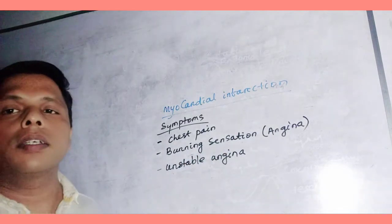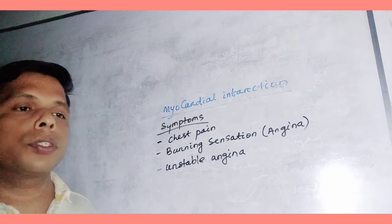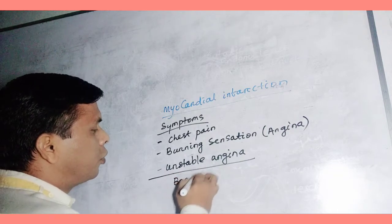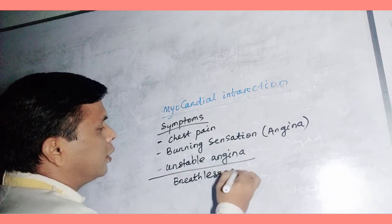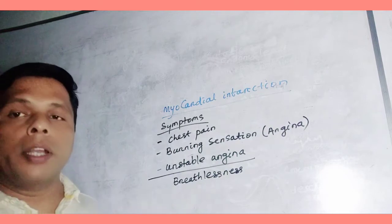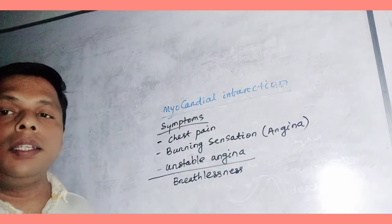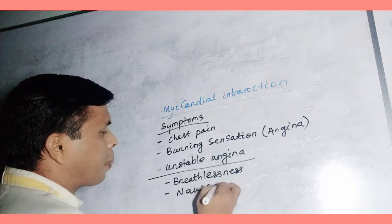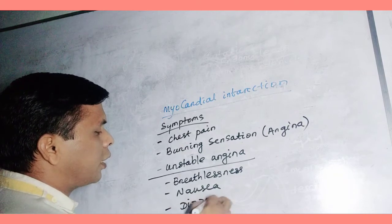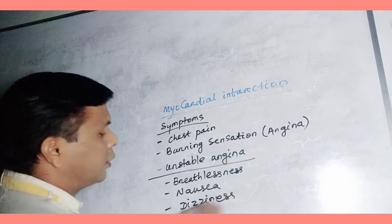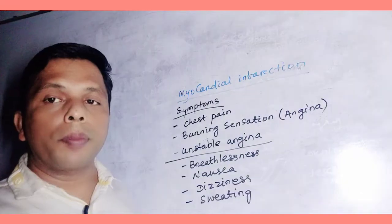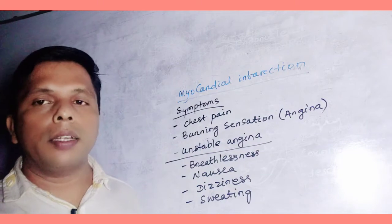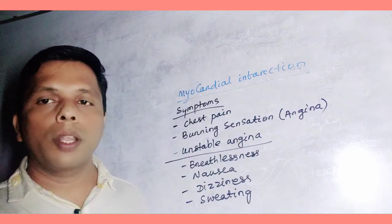Unstable angina is also a symptom of acute coronary syndrome. These are the major symptoms. Some other symptoms are breathlessness, nausea, dizziness, and sweating. These are the common symptoms of heart attack or acute coronary syndrome.